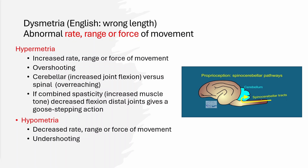Movement has to be very finely tuned. In the first lecture, we talked about how proprioceptive information is carried from receptors in the muscle spindles, tendons, and joint capsules up the spinal cord and then integrated in the cerebellum so as to precisely control movement.